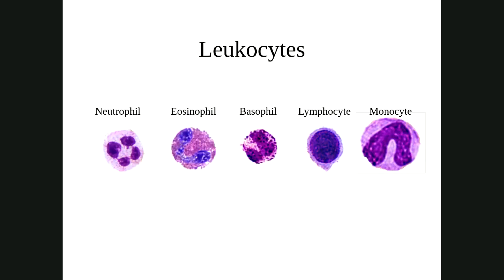Neutrophils are the microphages — the first line of inner defense. Once something gets through our skin or membranes, this is the first thing that comes and attacks it. They especially like to eat bacteria. Eosinophils can help downregulate inflammation — they can eat the antigen-antibody complex that causes inflammation. They're also involved in fighting multicellular parasites like worms. Basophils are the upregulators of inflammation, causing it by releasing histamine and heparin. Histamine is a vasodilator and heparin is an anticoagulant.